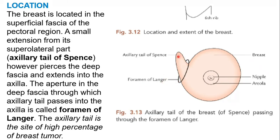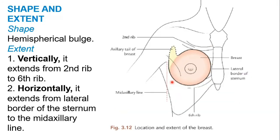The opening through which this extension passes is called the foramen of Langer. This is a very important point. Now we are going to discuss the extent of the mammary gland. You should know the extent in both vertical and horizontal ways.